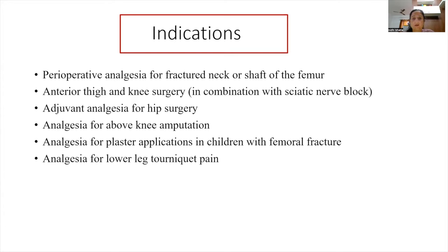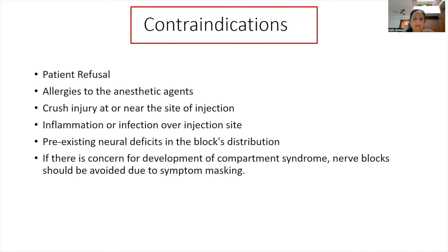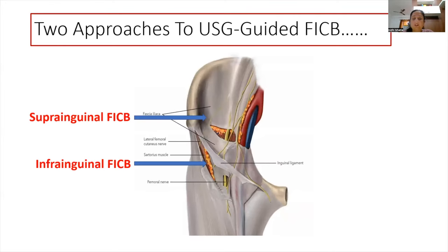The main indications for the fascia iliaca compartment block include perioperative analgesia for fracture neck or shaft of femur, anterior thigh and knee surgeries, hip surgeries, above-knee amputations, plaster application in children with femoral fractures, and tonic pains. Contraindications include patient refusal, allergy to local anesthetic, crush injury or infection at the injection site, pre-existing neural deficits in the block distribution, and concern for compartment syndrome.